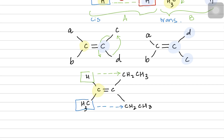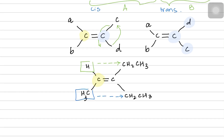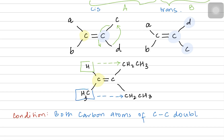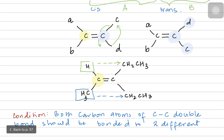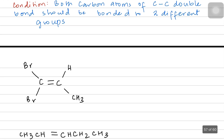That is why the main condition for geometrical isomers is: both carbon atoms of the carbon-carbon double bond should be bonded to two different groups. They can't be bonded to two same groups. For understanding, I have some examples and we will see if they can make geometrical isomers or not.